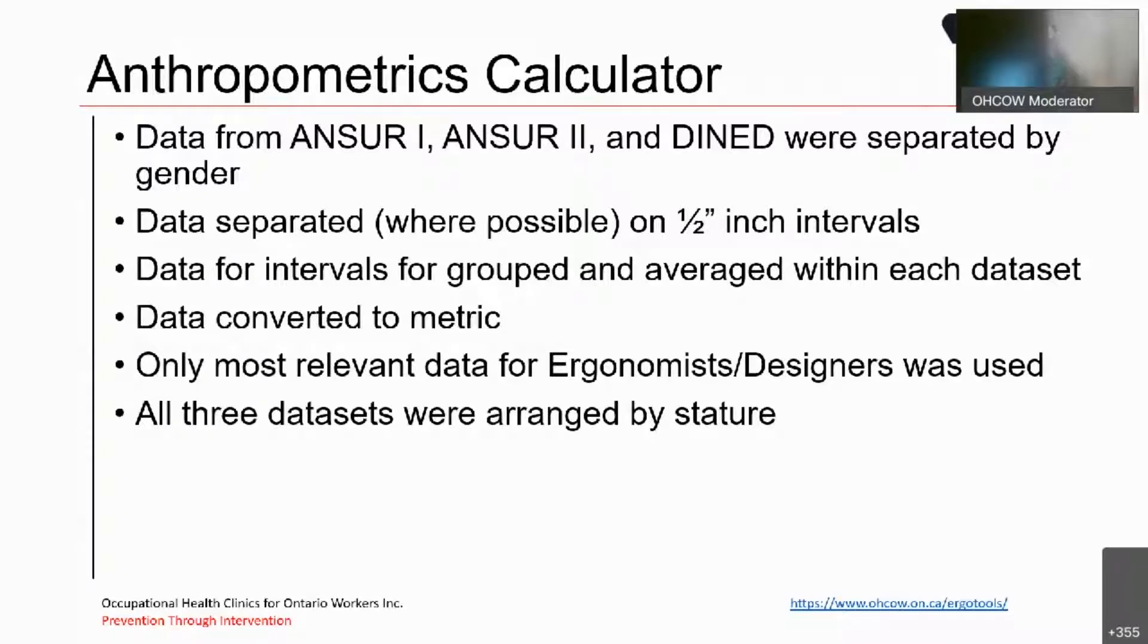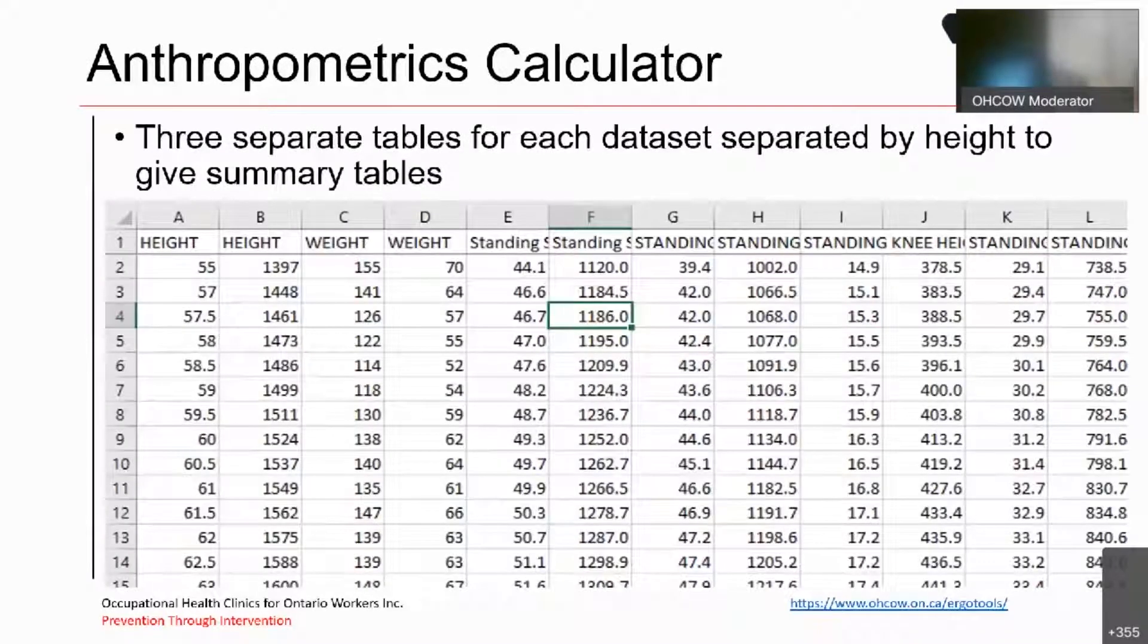Data itself was separated based on half-inch intervals, and it's available both in metric and imperial. The data for the intervals were grouped and averaged within each data set. The data was converted to metric from imperial. Only the most relevant data for ergonomists and designers was used. So, for example, head circumference doesn't really benefit an ergonomist very much when it comes to workplace modifications. And all the data sets were arranged by stature. So, for example, here's one of the data sets that were rearranged with the height in inches, height in centimeters, weight pounds, weight kilograms, and then each measurement we used.